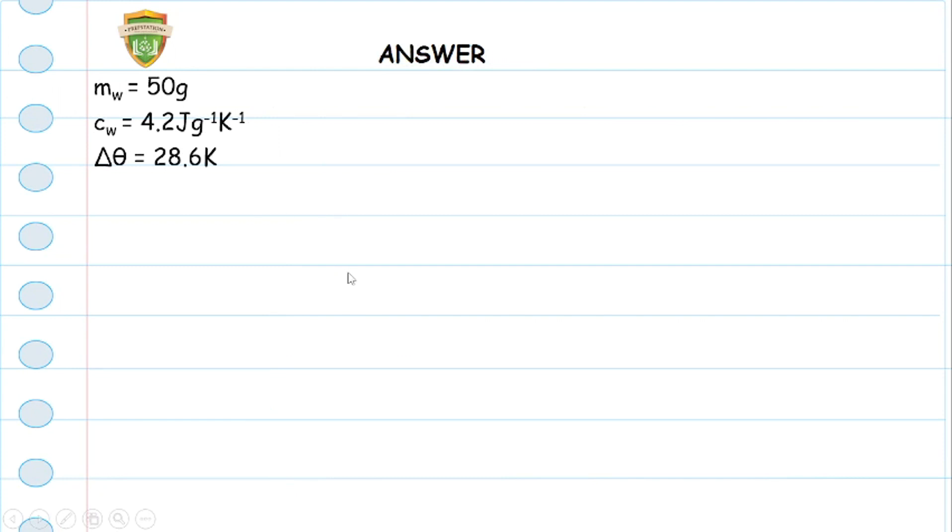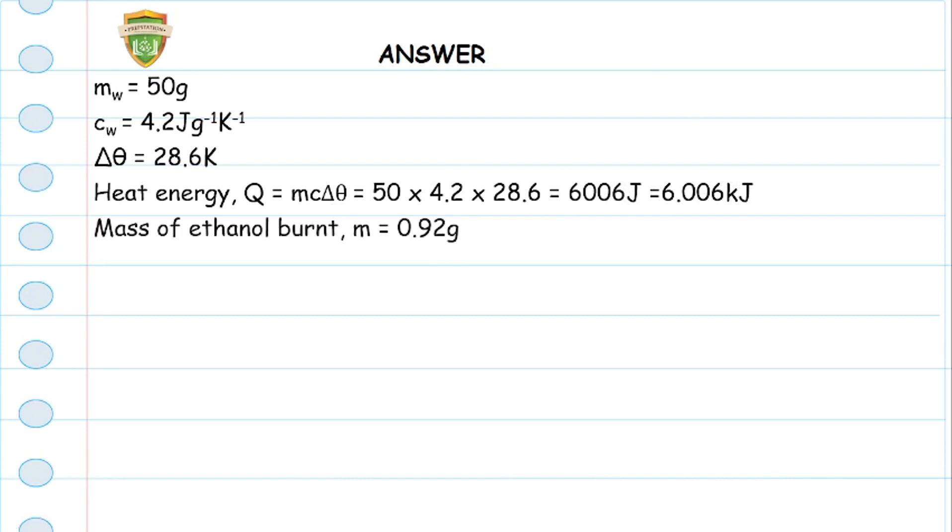The first thing we do is get our parameters out. We're given the mass of water to be 50, the specific heat capacity to be 4.2, and the rise in temperature to be 28.6 Kelvin. We'll find the heat energy using all this. The formula for heat energy is simply mass times specific heat times the change in temperature. So multiply all this and we get a heat energy of 6,006 joules or 6.006 kilojoules.